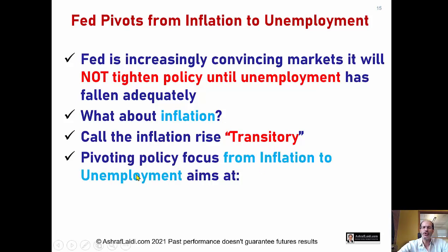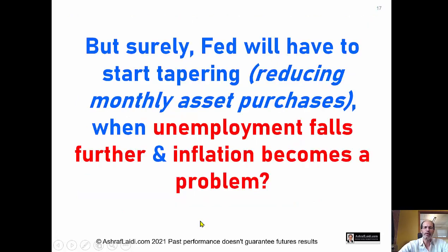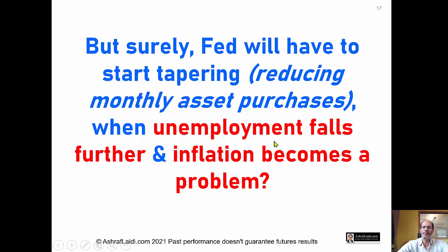Pivoting policy from inflation toward unemployment aims at managing bond market expectations — telling the bond market, do not worry about inflation, it's only temporary. You may see the 10-year yield pushing towards 1.64, 1.67, 1.7, but this is going to continue to let them sustain liquidity and keep asset purchases at the expense of yields and the U.S. dollar. Some people are saying the Fed will signal tapering at the Jackson Hole symposium in late August, when unemployment falls further and inflation becomes a problem.